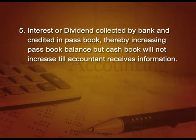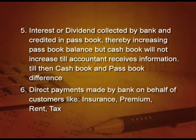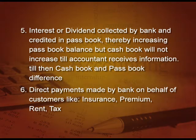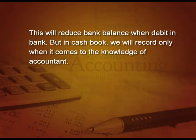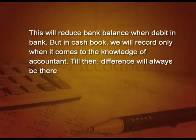Fifth point: interest or dividend collected by the bank and credited in the pass book, thereby increasing the pass book balance, but the cash book will not increase until the accountant receives the information from the bank. Sixth point: direct payments made by the bank on behalf of customers — suppose the customer instructs the bank to pay insurance premium, rent, tax, etc., on a particular date. This will reduce the bank balance as it is debited in the pass book, but in the cash book we record it only when it comes to the knowledge of the accountant. Also, cheque deposited but dishonored — when the cheque is dishonored, the bank will debit in the pass book, but in the cash book only when it comes to the knowledge of the firm.